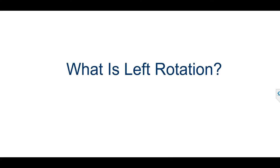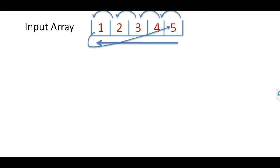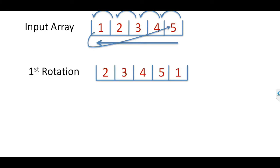First, let's understand what is left rotation. Suppose you have an input array which has to be rotated. This array has 5 elements: 1, 2, 3, 4, 5, and you are told to left rotate it by 1. Left rotate by 1 means the array will shift to the left by 1 position. Each element will move to the left index, and then the first element will go to the end. In this way, the array has rotated left.